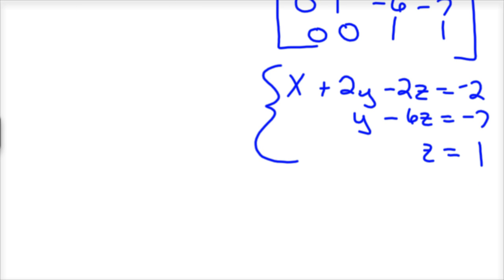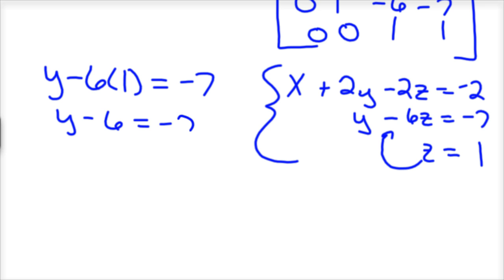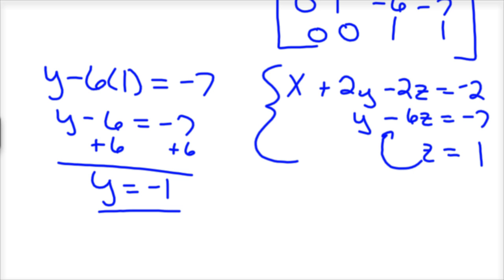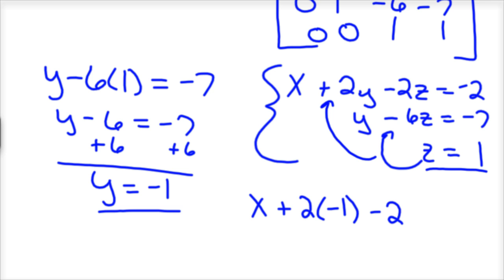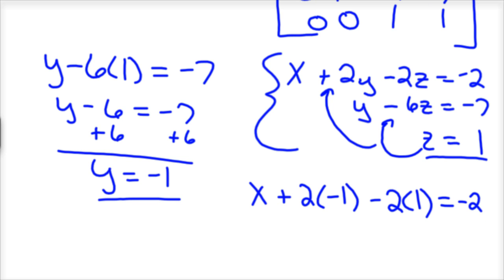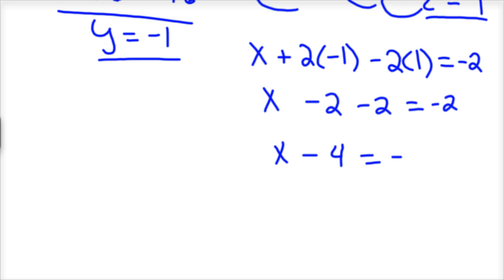Now you can work backwards to find the rest of your answers. When z equals 1, plug it into the equation above: y minus 6 times 1 equals negative 7, so y minus 6 equals negative 7. Add 6 to both sides and y equals negative 1. Now plug y equals negative 1 and z equals 1 into the top equation: x plus 2 times negative 1 minus 2 times 1 equals negative 2. So x minus 2 minus 2 equals negative 2, then x minus 4 equals negative 2. Add 4 to both sides and x equals 2.